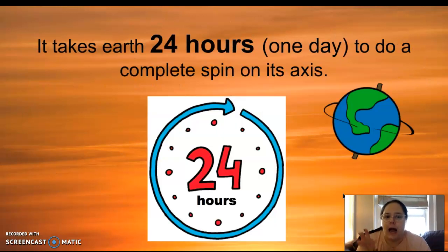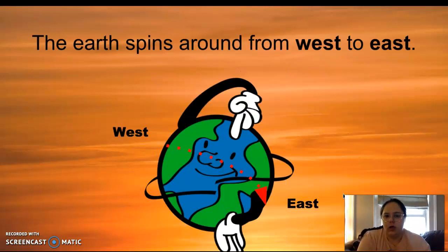It takes 24 hours, which is one day to do a complete spin on its axis. So when Earth spins like this, it is going to be 24 hours or one day for each full spin it takes. It does spin from west to east. Not super important, but that is the way that it spins, west to east.